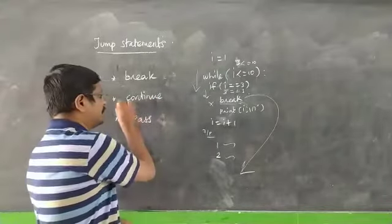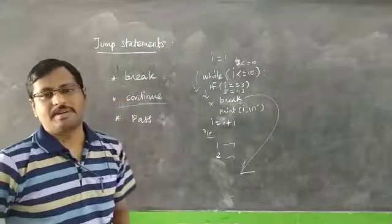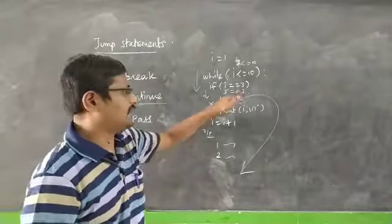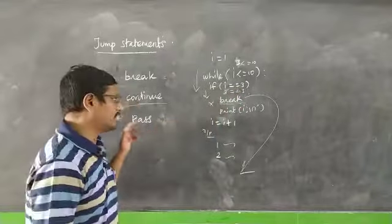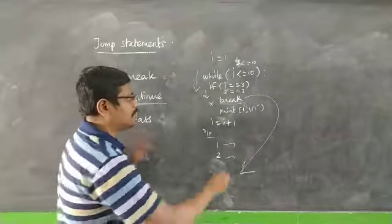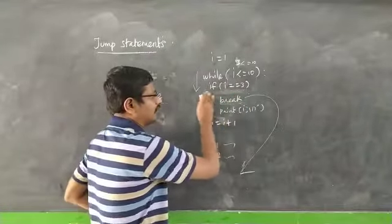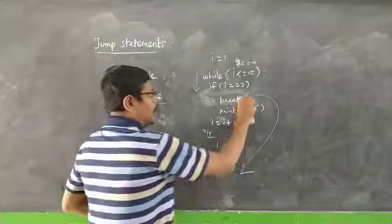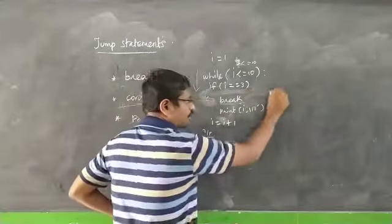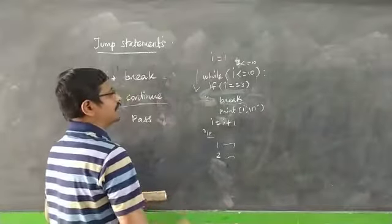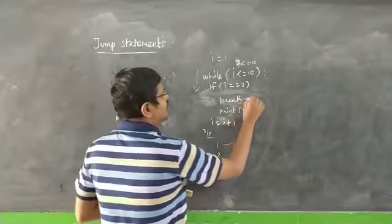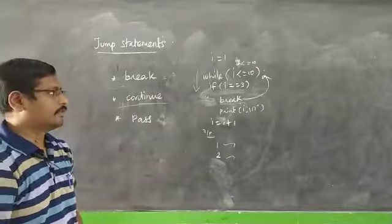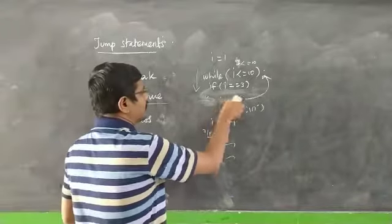The next statement is the continue statement. If a continue statement is reached inside a loop, when you reach a certain condition, you keep it in mind: skip that iteration and continue. If you use break, the loop exits; if you use continue, the loop continues to the next iteration.